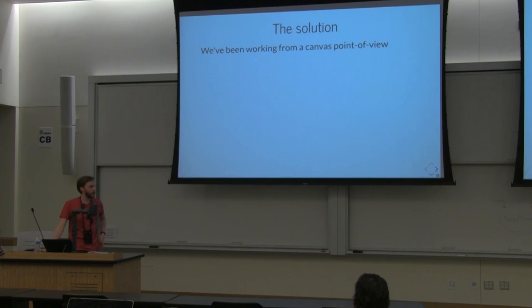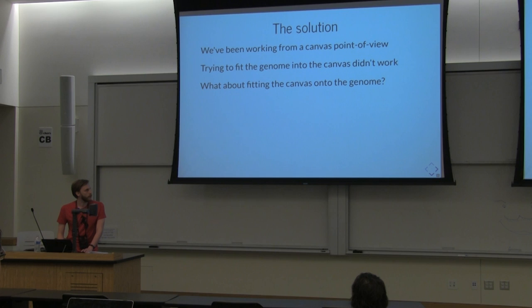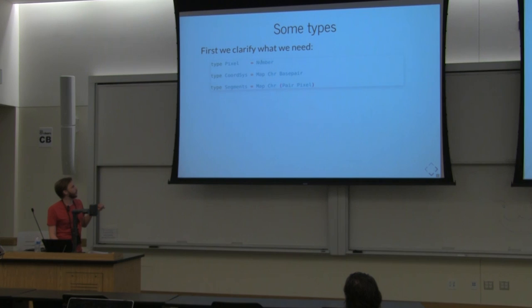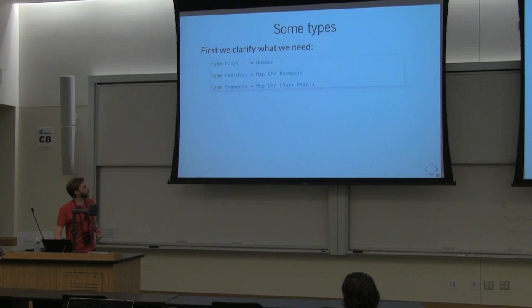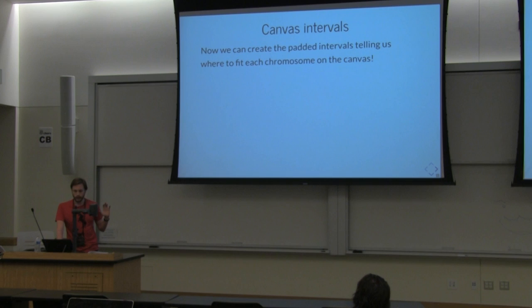The main problem is that we've been looking at this from a canvas point of view — trying to fit the genome into the canvas — but that clearly doesn't work. So how about we flip things around and instead think about fitting the canvas onto the genome? This actually seems to work out. Let me clarify some of the types: Pixel is just a JavaScript number. CoordinateSystem is a map from chromosome names to their sizes. And Segment is a map from chromosomes to pixel intervals corresponding to where that chromosome is going to be drawn on the canvas.